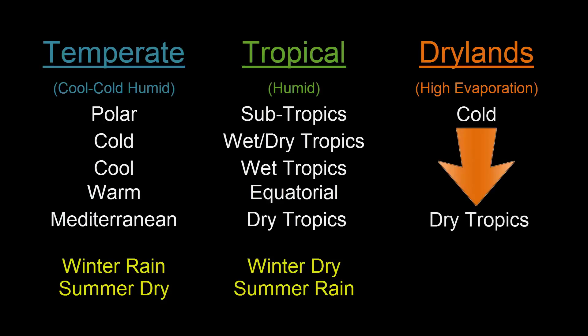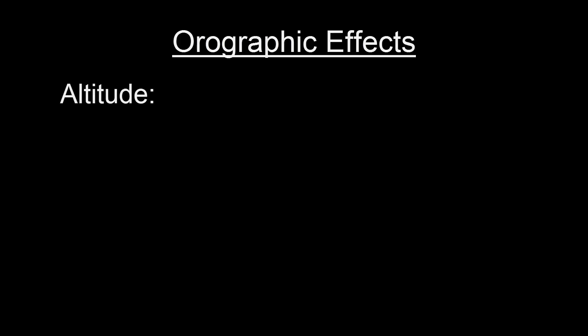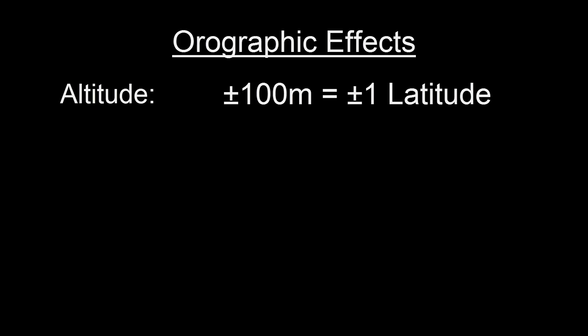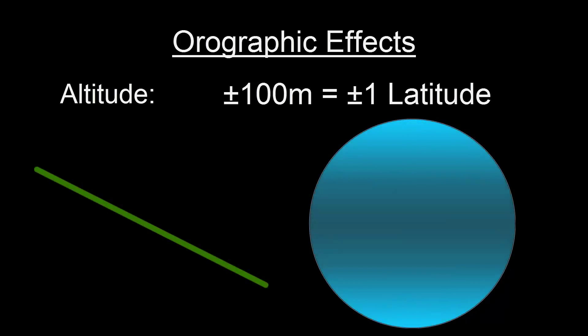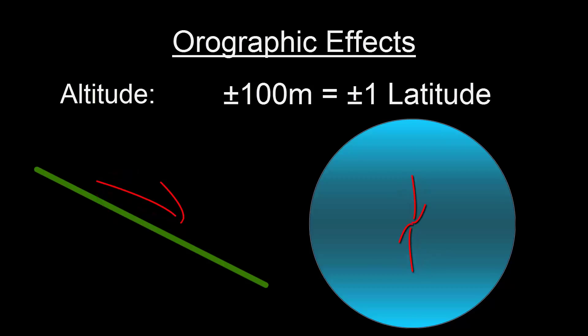We spent a good deal of time discussing the orographic effects on climate. We talked about how altitude can affect climate and how generally a 100-meter change in altitude is equivalent to one latitude in change, either away from or towards the equator. As we go up in elevation we move away from the equator, and as we go down in elevation it is similar to moving closer to the equator.